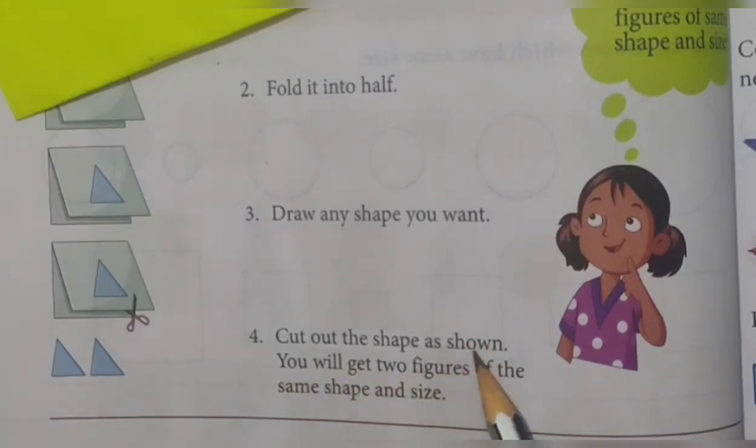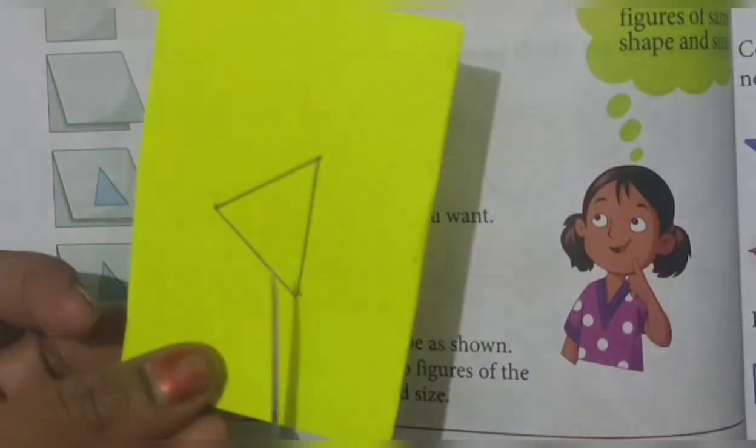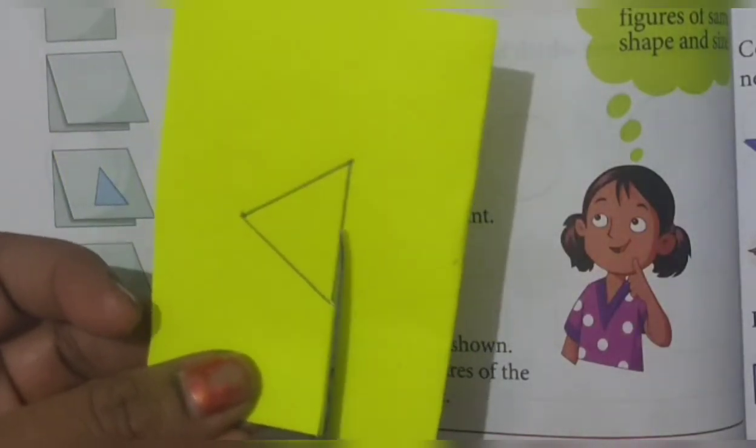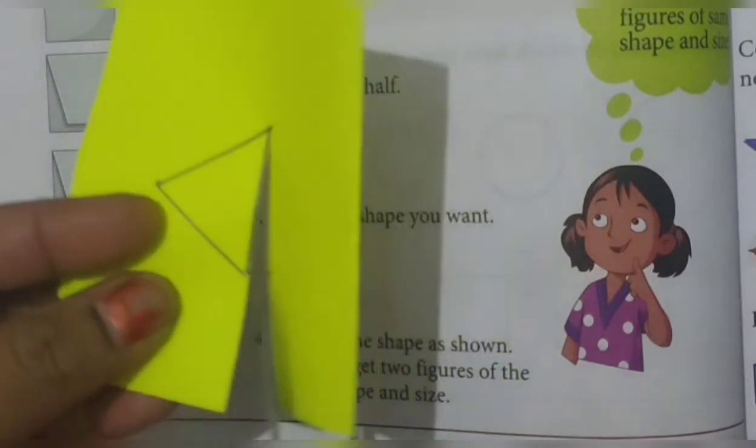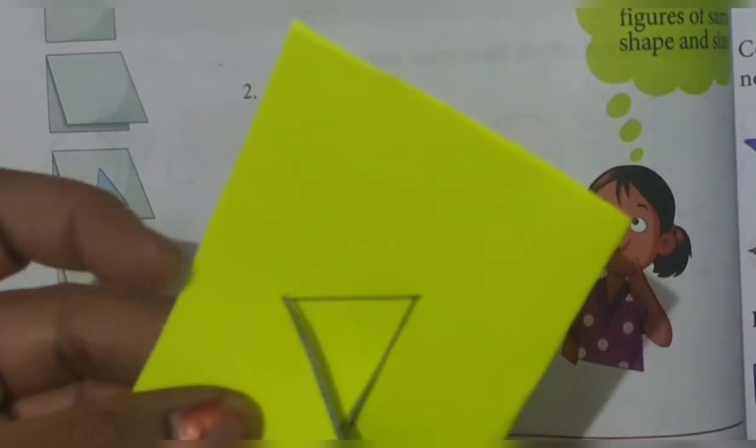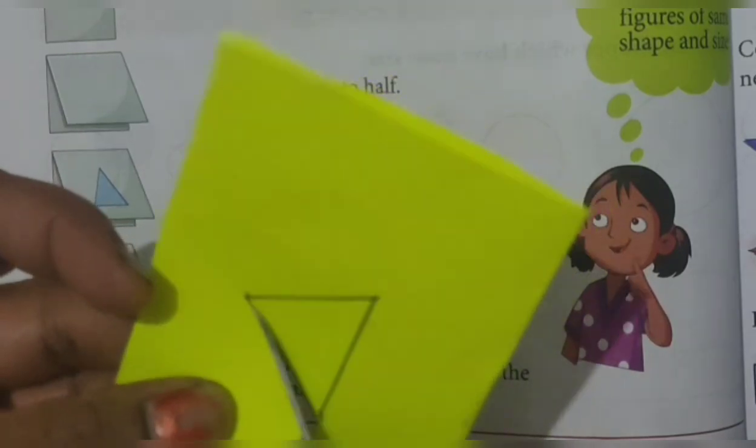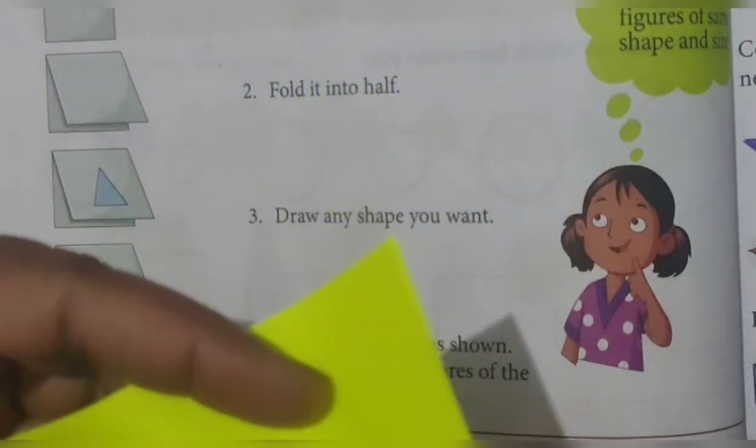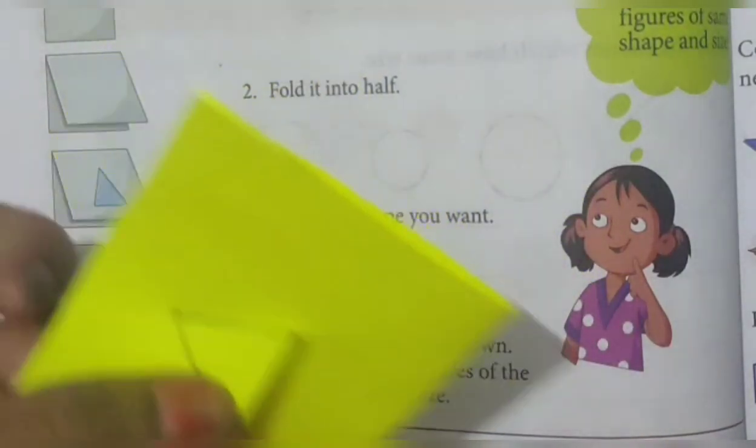Cut out the shape as shown. As our shape is there, we have to cut it. Now you will get two figures of the same shape. Now we will cut it by using scissors. Suppose see here, I cut it like this. Next, then this one side, next.